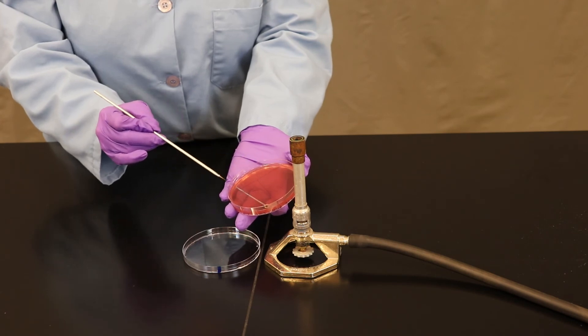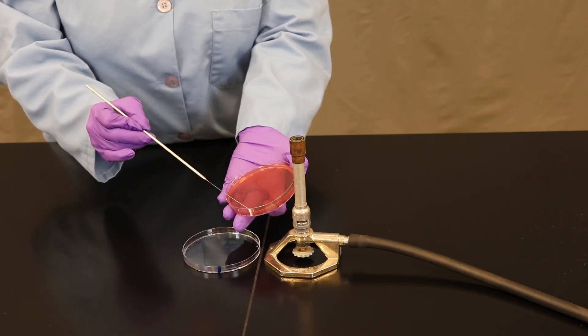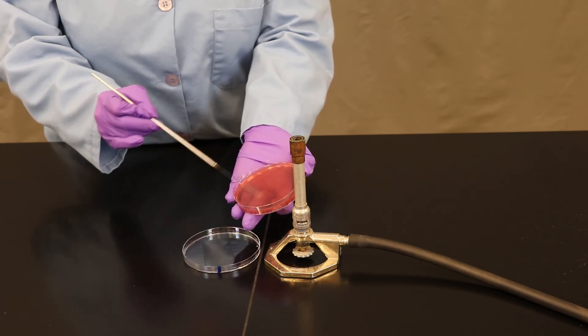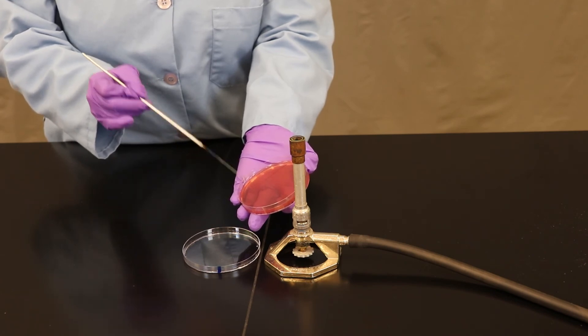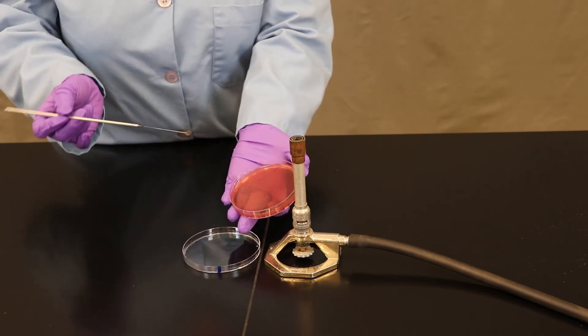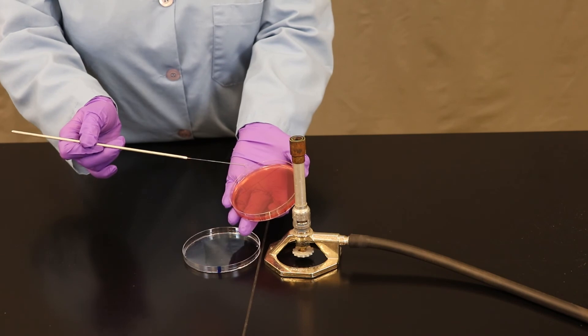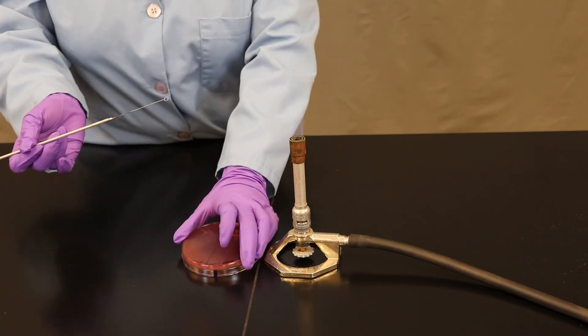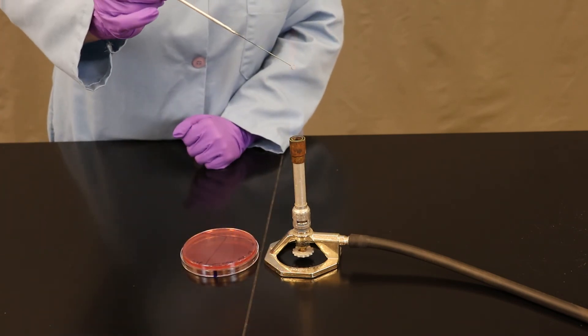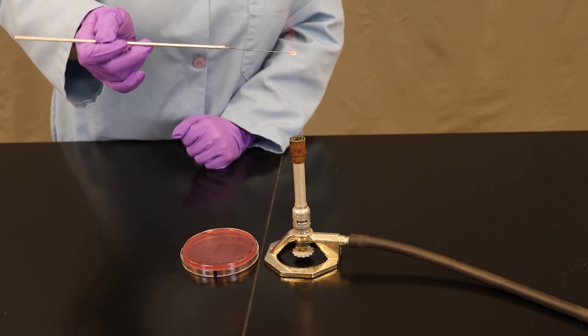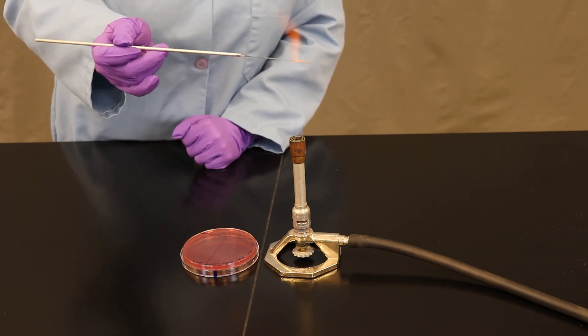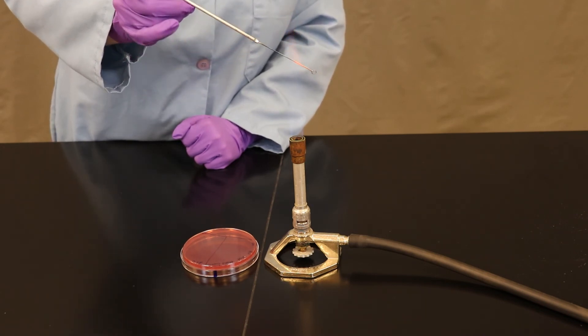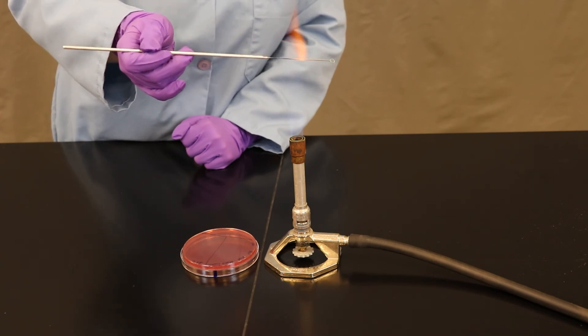Grab into zone two, maybe two or three times, and then again streak back and forth, taking up all of your surface area. Make sure you're not dipping back into zone one. Be sure to sterilize your loop one final time before putting it away into your kit. And that's how we perform a standard streak plate.